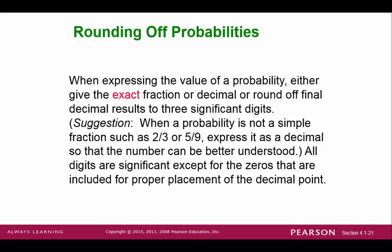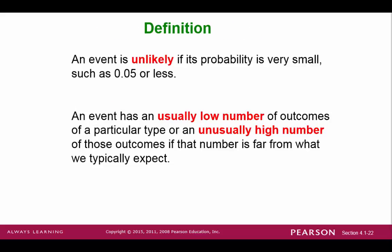The round-off rule for probability is as follows: if you can express your probability as a fraction, then leave it as a fraction to get the most exact value. If the fraction is too complicated or cannot be expressed as a fraction, we can express the decimal and round it off to three decimal places. It would follow that if you decide to express this as a percentage, then you would round off the percent to one decimal place. This slide also discusses events that are unusually low or unusually high — terms we use when anticipating a particular probability and getting something totally different.